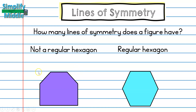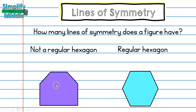If I try to make a horizontal line of symmetry on the irregular hexagon, it would create two different shapes — a rectangle on the bottom and a smaller version of the hexagon on top — so that doesn't work. Going diagonally has the same issue, creating two different shapes. So the only line of symmetry in this non-regular hexagon is the vertical line of symmetry.